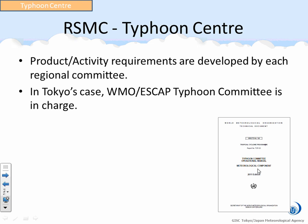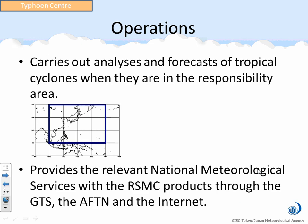Specific product and activity requirements — such as what kind of advisories and monitoring activities are necessary — are developed by each regional committee. In Tokyo's case, Japan is a member of WMO and the United Nations ESCAP Typhoon Committee, and this organization developed an operational manual. Tokyo Typhoon Center's activities are based on this manual. The center area of responsibility covers the Western North Pacific and the South China Sea, including marginal seas and adjacent areas. The center carries out analysis and forecasts of tropical cyclones when they are in the responsibility area.